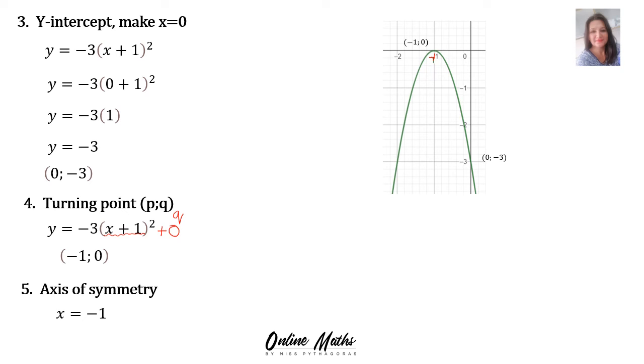Then, the y-intercept is the point 0 comma negative 3. Our axis of symmetry, the dotted line. And you have to give me the equation, x is equal to minus 1. Let's look at the domain and range.